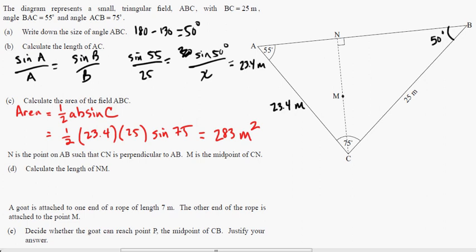For the next part, it says N is a midpoint on AB such that CN is perpendicular to AB. So that means these are right angles right here. M is the midpoint of CN. So that cuts that in half. Calculate NM.